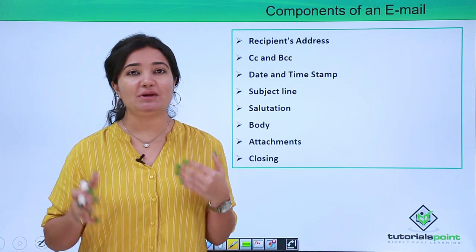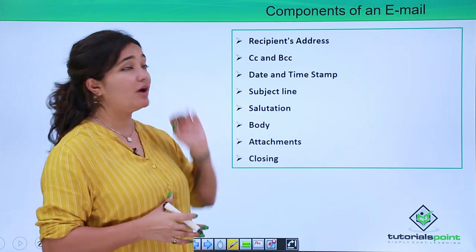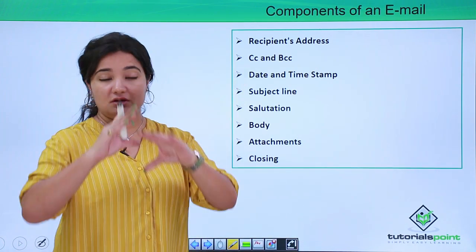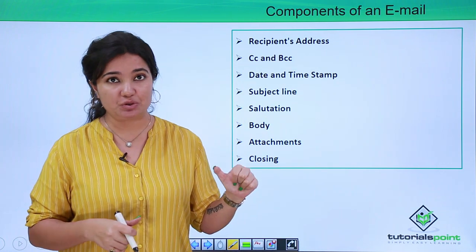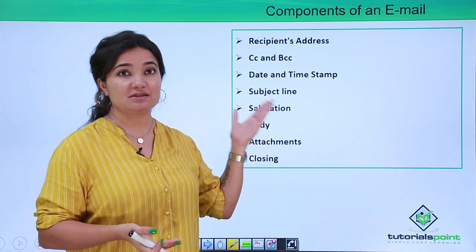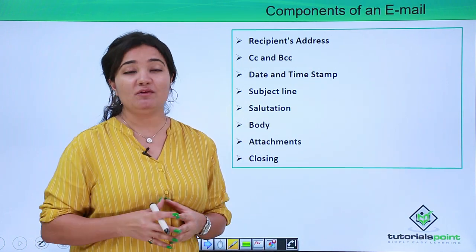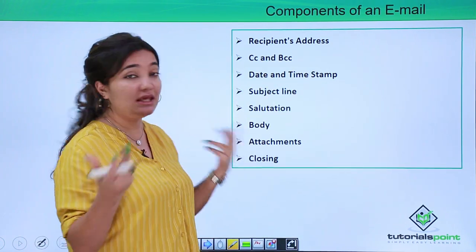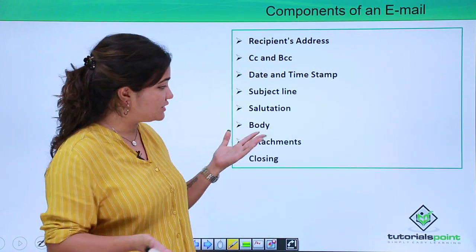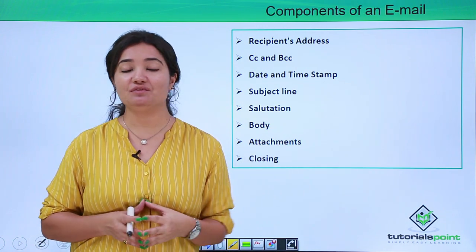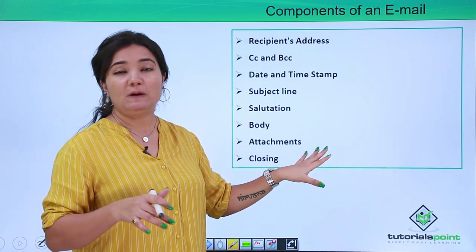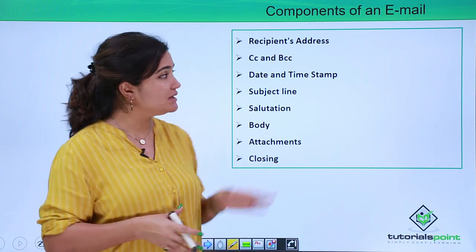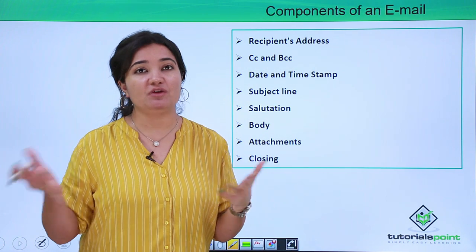First of all, let me quickly make you aware of what are the parts of an email. You have the recipient's address — to whom you are addressing your email. Then you have CC and BCC: CC means carbon copy and BCC means blind carbon copy. Then you have the date and time stamp, which is automatically there in every email. Then you have the subject line, salutation, body, attachment, and finally the closing. These are the basic parts of an email, regardless of which browser or media you use.